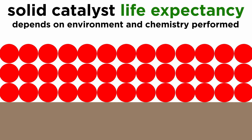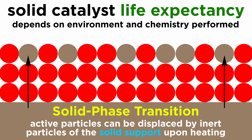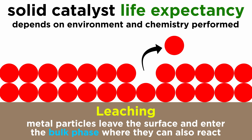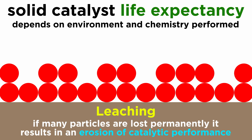Whereas solid catalysts are in general much more stable than homogeneous catalysts, they also have a finite life expectancy, which of course depends on the chemistry they are performing. Fouling is caused by the deposition of decomposed reactant materials on the surface of the catalyst, and coating the surface reduces catalytic performance. The surface can modify itself on heating, since active particles can be displaced by particles of solid support rising to the surface, a process called solid phase transition. In addition, metal particles can be lost from the surface into the bulk phase. This is called leaching, and sometimes the leached particles have activity of their own. Redeposition never occurs at the exact site where the particle was leached, and this results in a surface displaying variable reactivity. If the leached particles are lost permanently, the result is an erosion of catalytic performance.